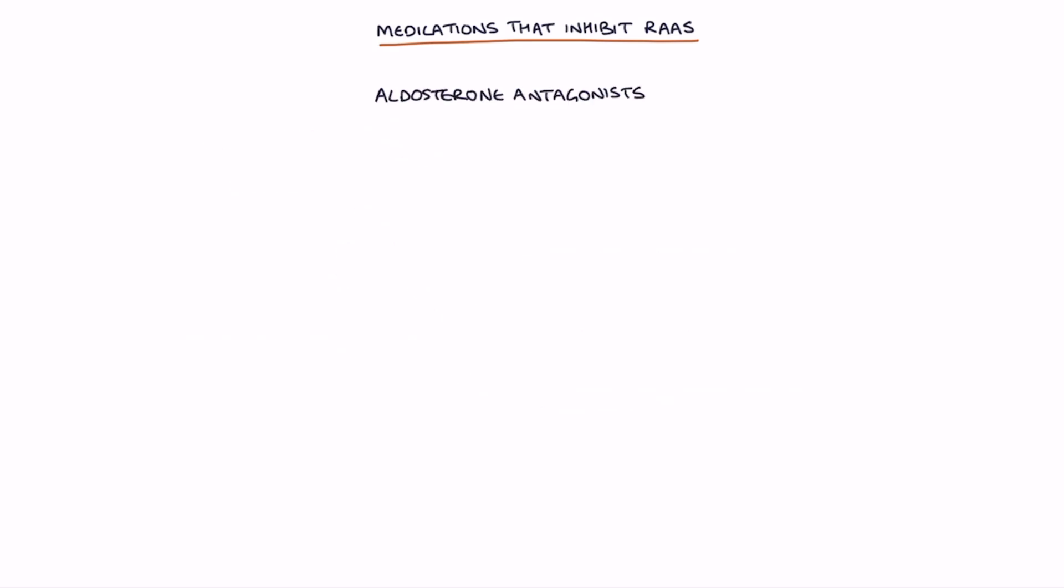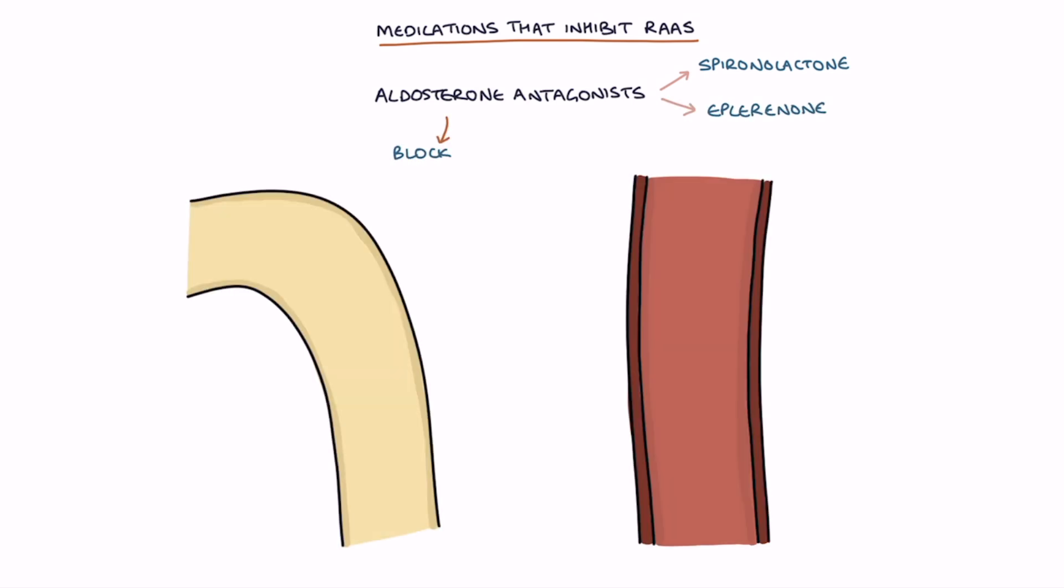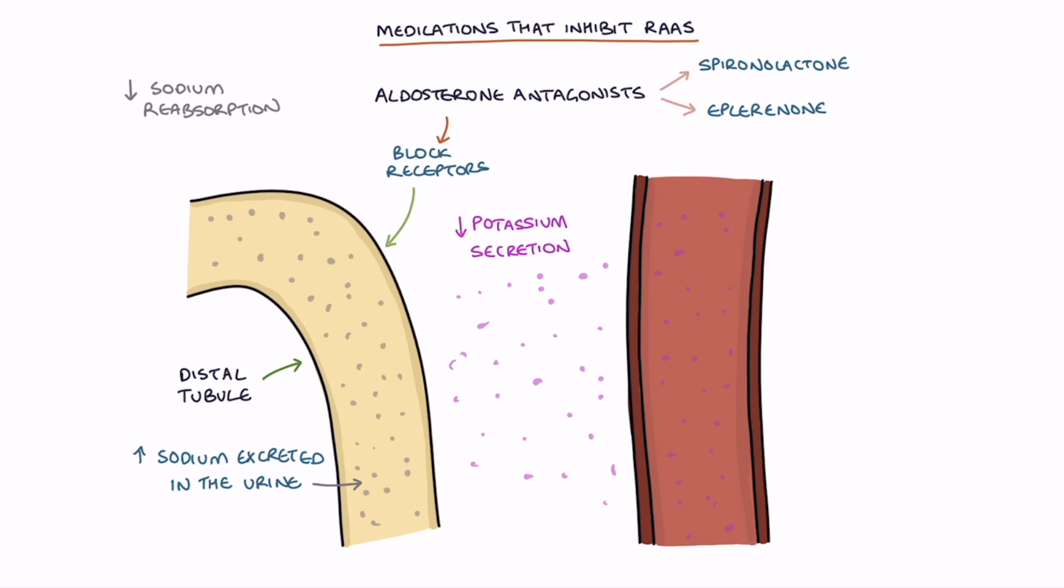Aldosterone antagonists, for example spironolactone or eplerenone, work by blocking the receptors that aldosterone acts on, inhibiting the effects of aldosterone. They result in less sodium reabsorption and less potassium secretion in the distal tubules in the kidneys. More sodium is excreted from the body in the urine. Water follows the sodium by osmosis and is excreted in the urine. This results in diuresis, which is increased urine production.